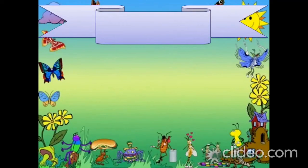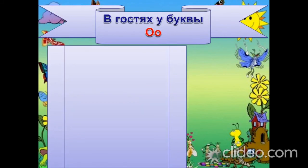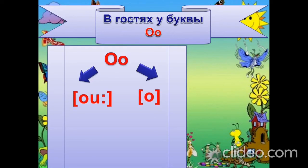Итак, в гостях у буквы Оу. Как и любая гласная, буква Оу может стоять в двух типах слогов — в открытом и в закрытом. В открытом слоге буква Оу даёт звук Оу, в закрытом — О. Открытый слог — это когда на конце стоит гласный звук, а буковка И на конце слова немая.